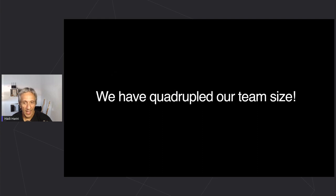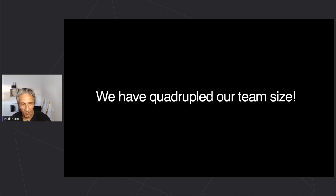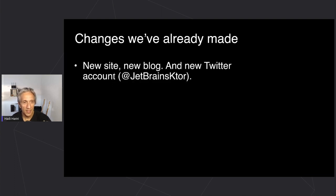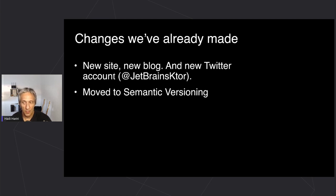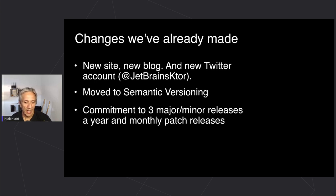That brings us to today. We have quadrupled our team size — which sounds great, though we went from two to eight people. We now have more developers, a support engineer, marketing, developer advocacy, technical writers, and more. This is going to allow us to move much faster. We have a new site, a new blog, a new Twitter account, and we've moved to semantic versioning to give users better insight into potential breaking changes.